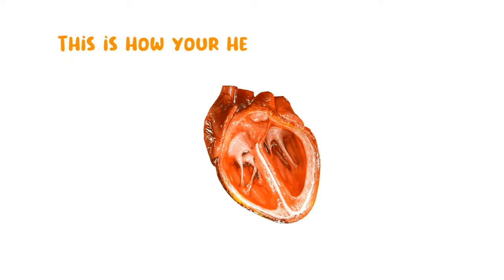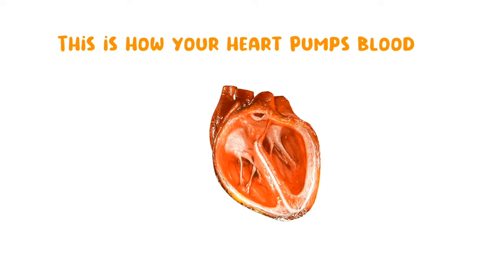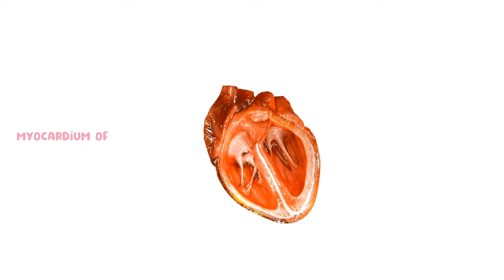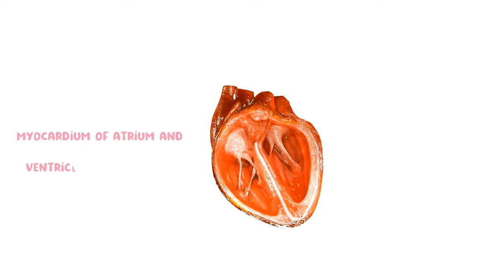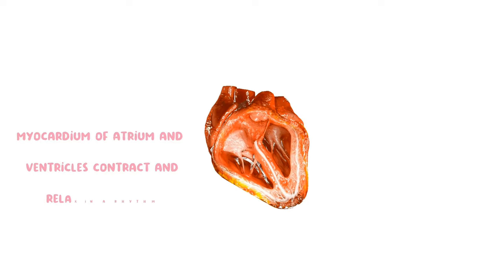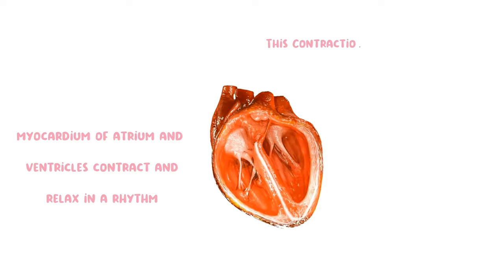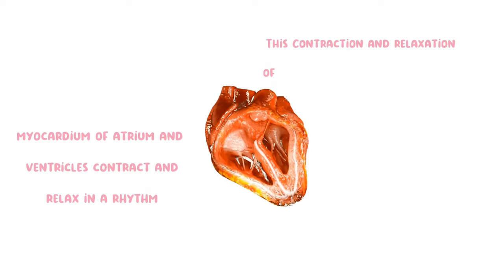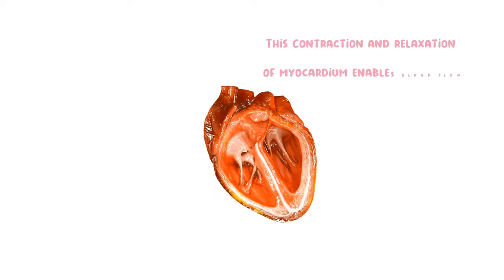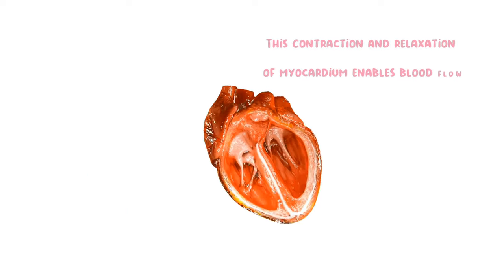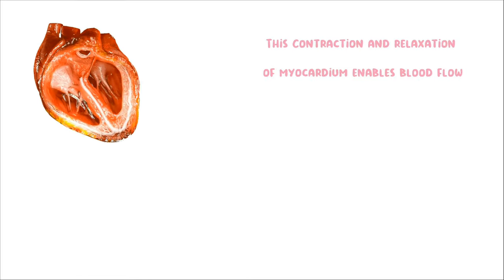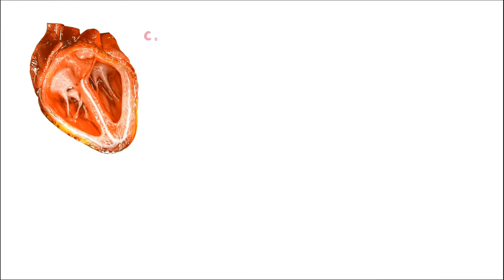In the 3D model of the heart, we can see the myocardial contraction and relaxation in action. This contraction of the atrium and ventricles enables the blood flow in and out of the heart. When the atrium contracts, the atrioventricular valve opens, and when the ventricles contract, the semilunar valves open.